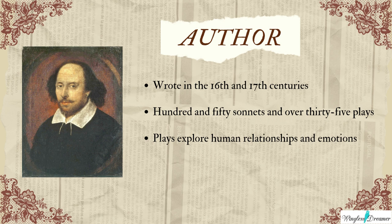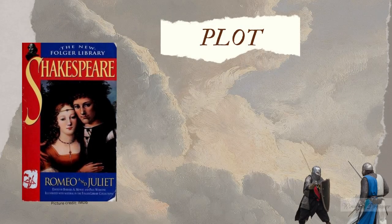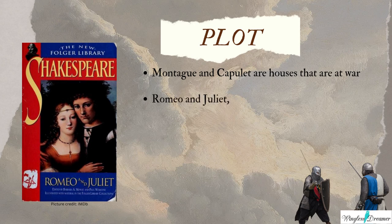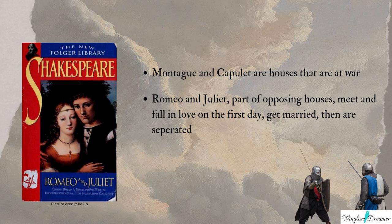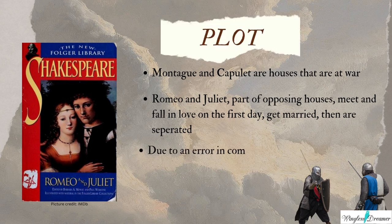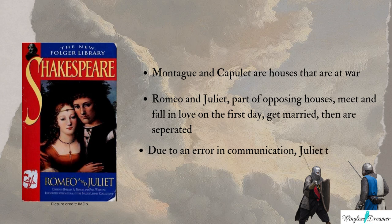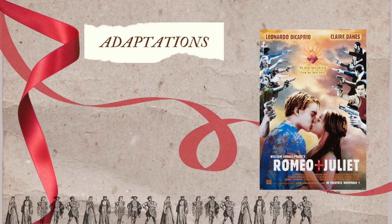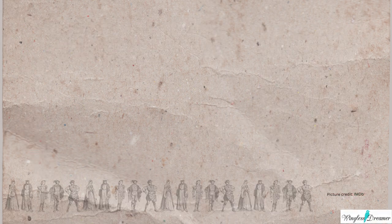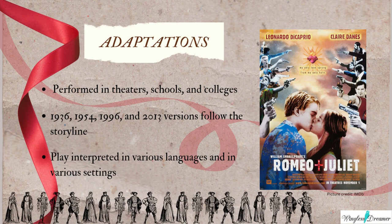Seeing as how the play came out so many years ago, we all know its plot. In the play, Romeo and Juliet are part of opposing houses. They meet and fall in love on the first day, get married and then are separated. Due to an error in communication, Juliet takes her own life and Romeo follows her. Romeo and Juliet is written as a play and has been performed countless times over the centuries in theatres, schools and colleges.